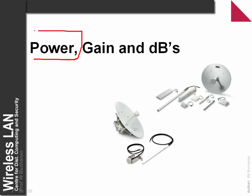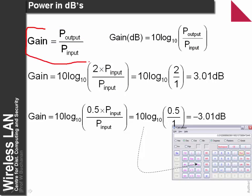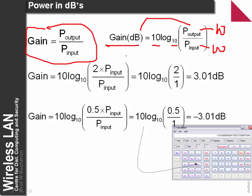A key terminology for us is power, defined by the gain in power, and typically measured in decibels. We need to understand how to convert from gain into decibels. Gain is the power out divided by the power in — we might get an increase or decrease in power. If power is measured in watts, we convert it to decibels by taking 10 times log base 10 of the ratio of output to input power.